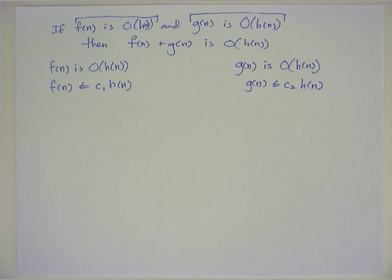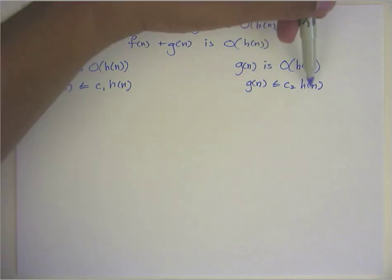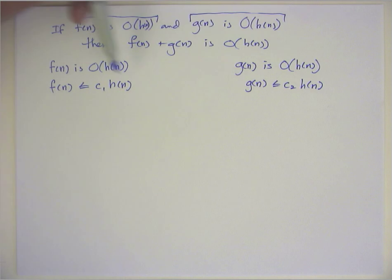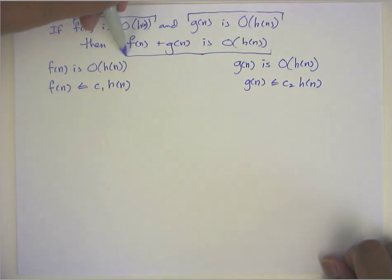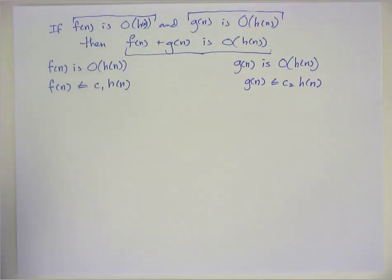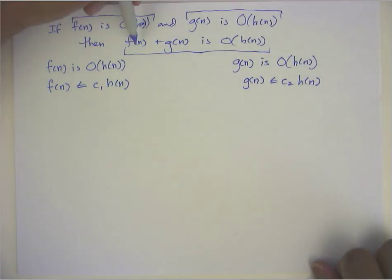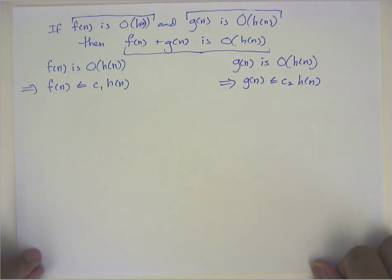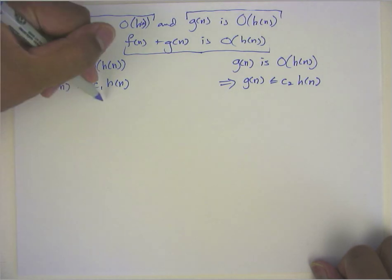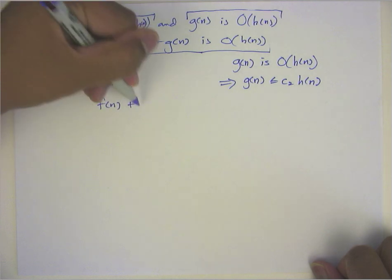So what we want to do then is show that if these two things are true, if f(n) is big O of h(n) and g(n) is big O of h(n), then the addition of these two, of f(n) plus g(n), will get us something that allows us to claim that they are both big O of h(n). So I'm going to start by taking these two relationships and I'm going to add the f(n) and the g(n). So f(n) plus g(n).